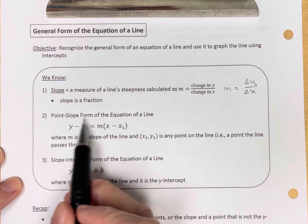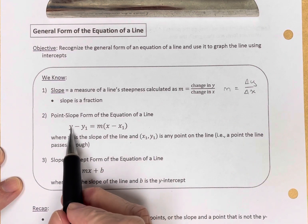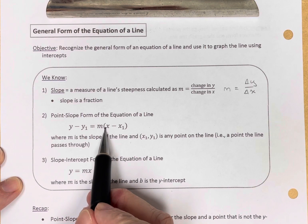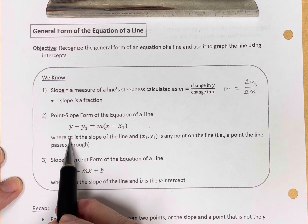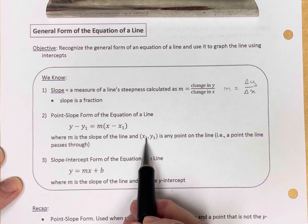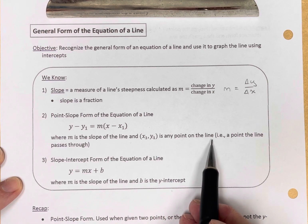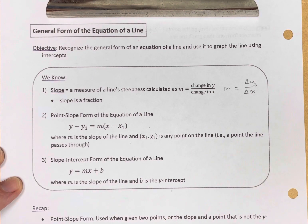We know the point-slope form of the equation of a line: y minus y1 equals m times x minus x1, where m is the slope of the line, and (x1, y1) is any point on the line, a point the line passes through.